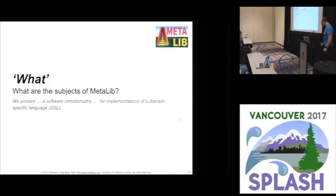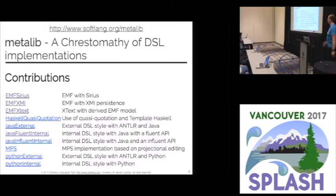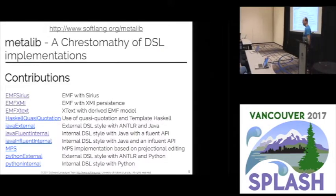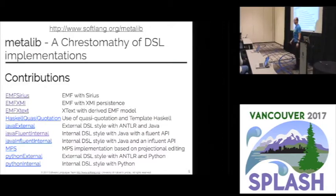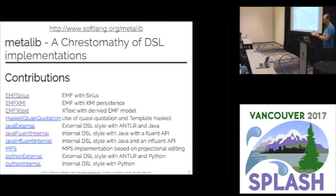So what are we actually collecting in MetaLib, how do we collect it, and why do we do it? Basically, this is a list of contributions included in the paper, so you immediately recognize popular technologies like X-Text and MPS, and also usage of mainstream programming languages. We collect contributions using all kinds of different technologies, give names to them, organize them, and make them web-explorable.